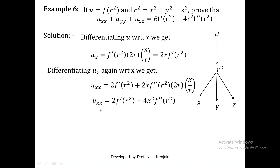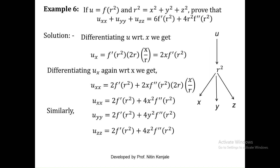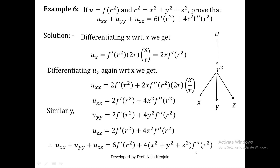On similar lines you can find uyy and uzz by replacing x square with y square and z square respectively. Now when we add these three derivatives, the sum of the first terms gives 6 f dash of r square as required. When we add the second terms, we get 4 f double dash of r square common, and inside the bracket x square plus y square plus z square, which equals r square. So the second group contributes 4r square into f double dash of r square as required. Hence proved.